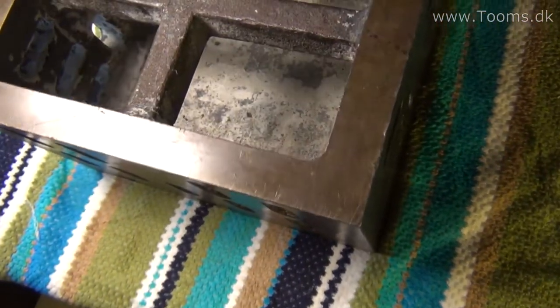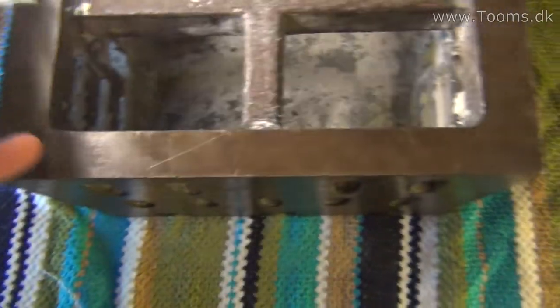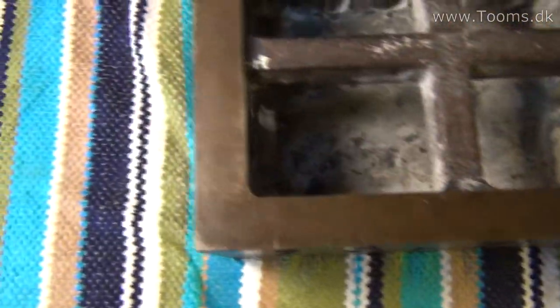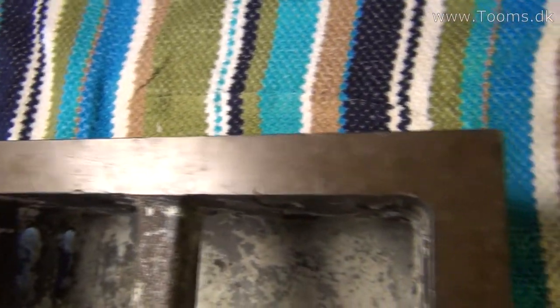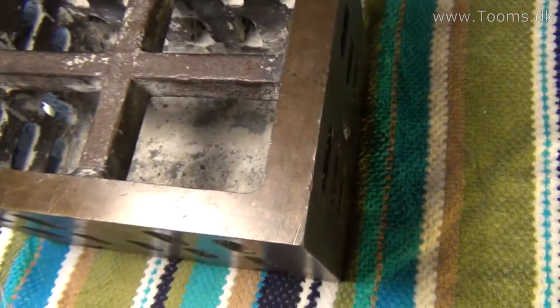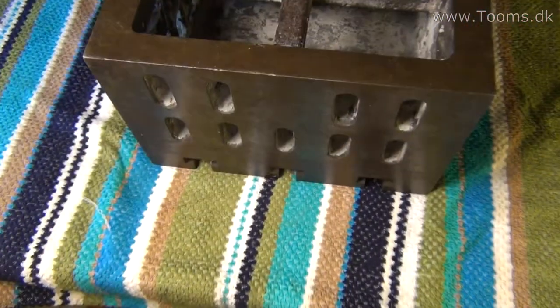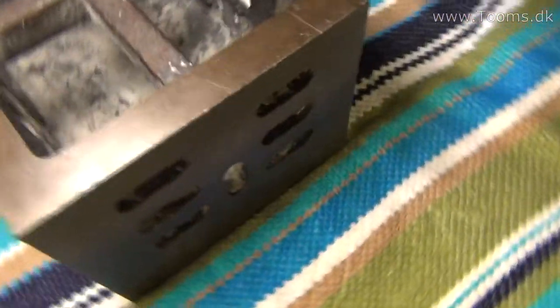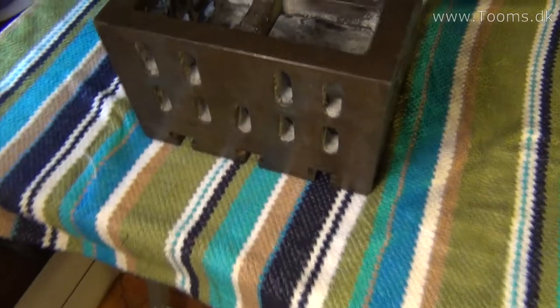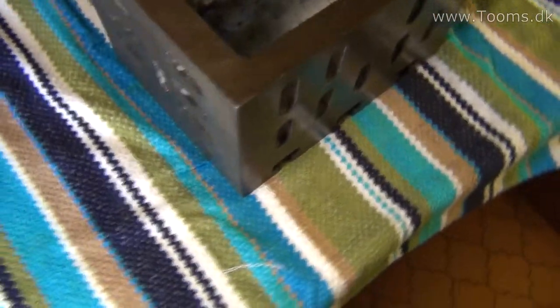But you can see the surface on the edge here, it is a lot better than it was before. I don't need the inside of the block. What I need is the outsides to clamp pieces onto when it is milling on the machine.